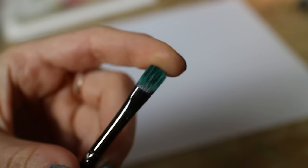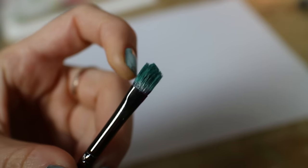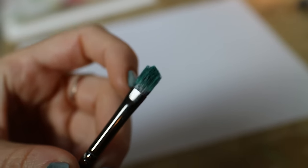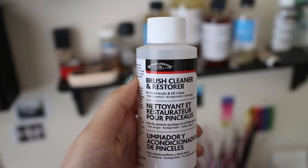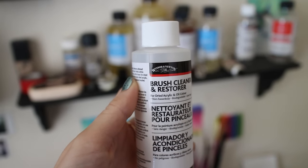Like this one here that I forgot about because I'm a terrible paintbrush mother. So I use this brush cleaner and restorer from Winsor & Newton. I found it at Michael's and bought it with a coupon.